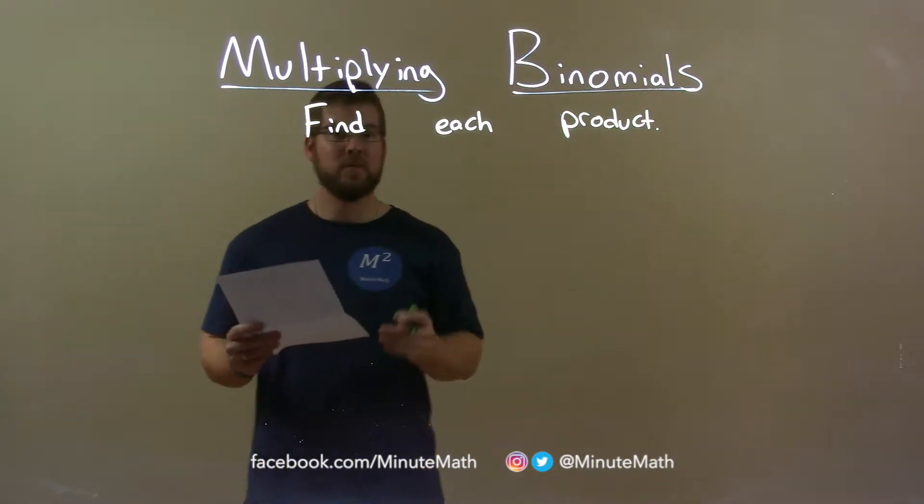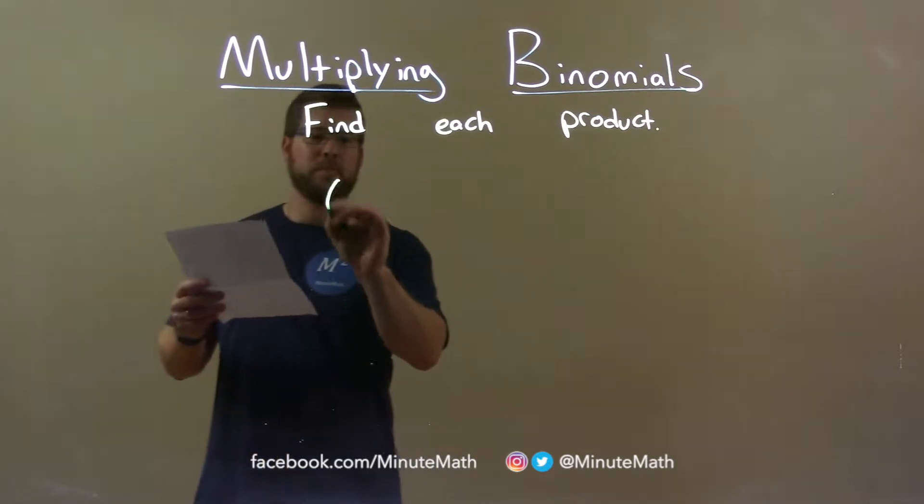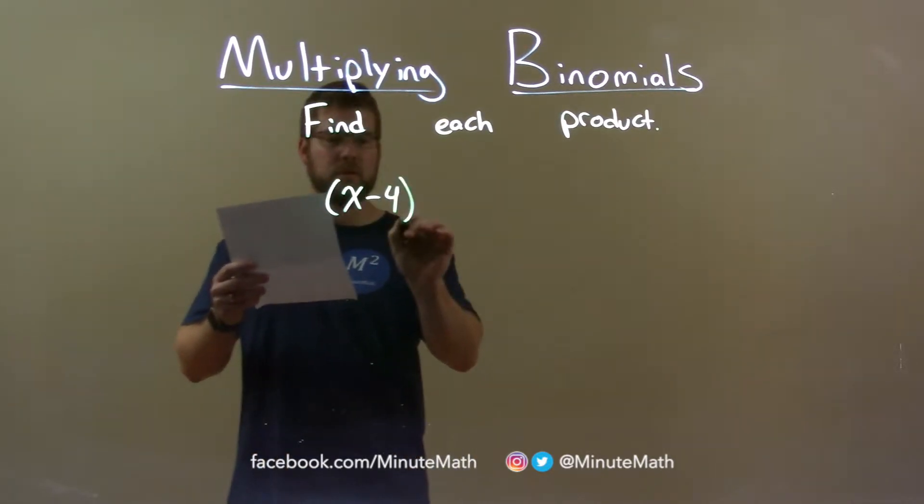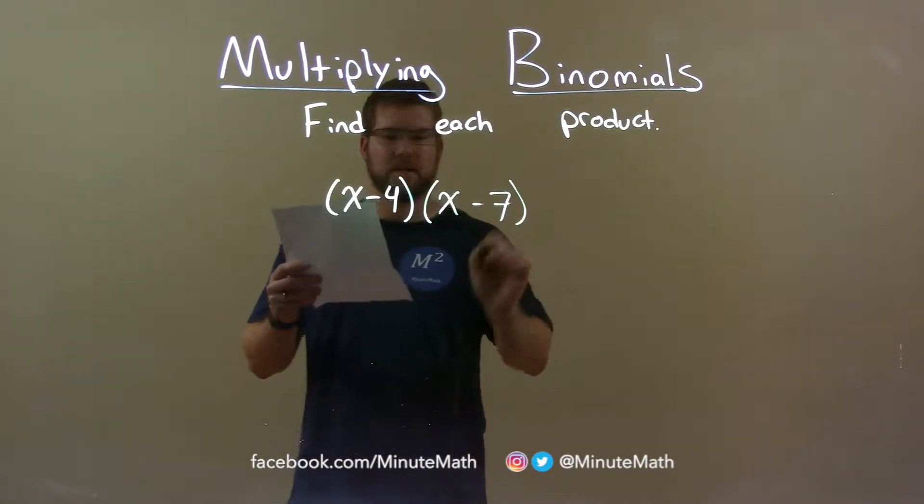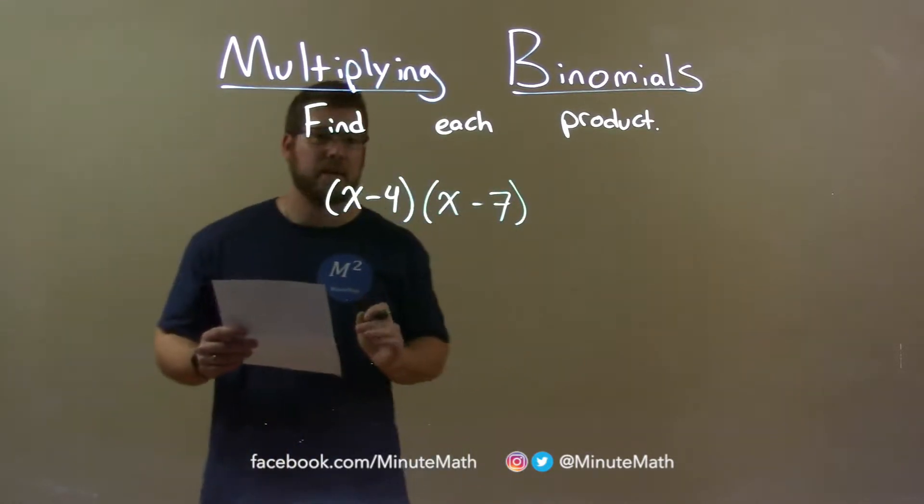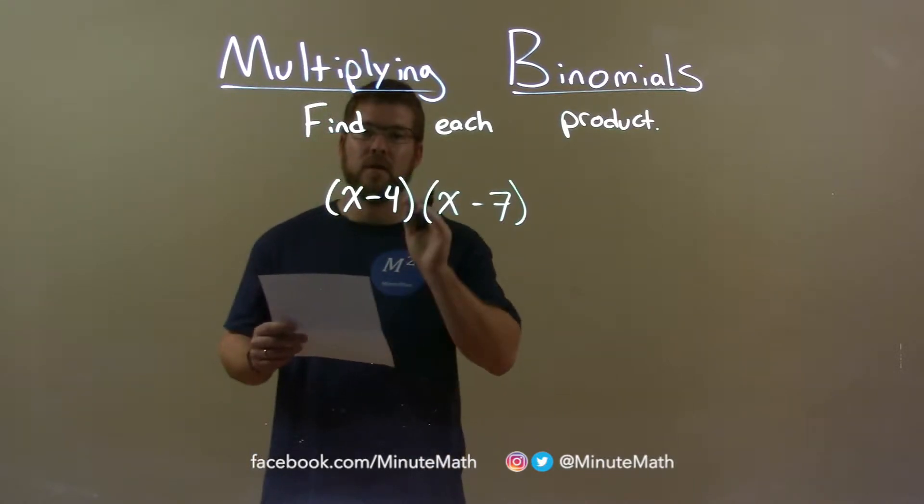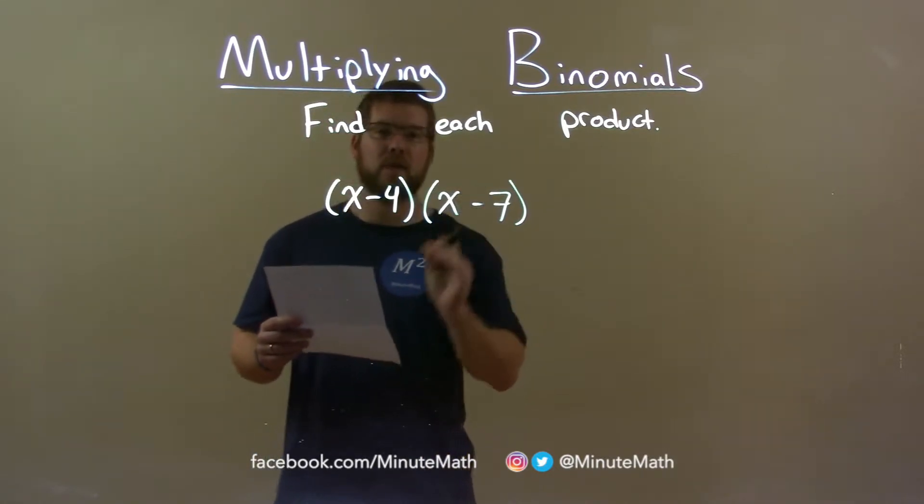If I was given this product, x minus 4 multiplied by x minus 7, I want to take all parts of our first parenthesis and multiply it by all parts of our second parenthesis.